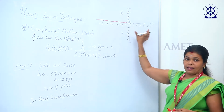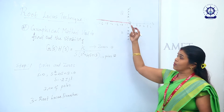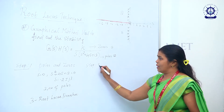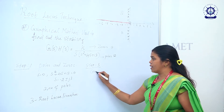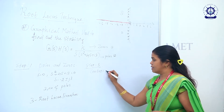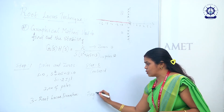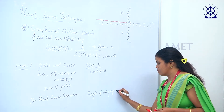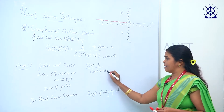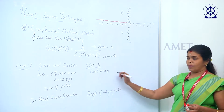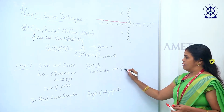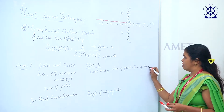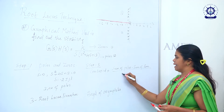Step 3 is to find the centroid and the angle of asymptotes. The centroid formula is: (sum of poles − sum of zeros) / (n − m), where n is the number of poles and m is the number of zeros.